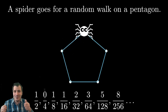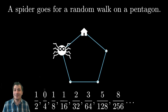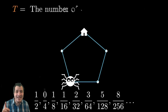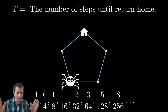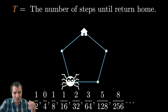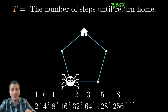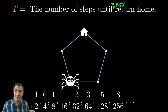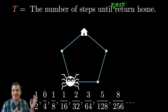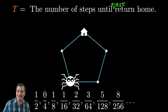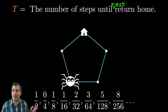What I'd like to do is show you the problem and explain it from a different point of view that explains why the Fibonacci numbers come up. It's a very simple-sounding problem: there's a spider who lives on a pentagon, and he goes for a random walk. He looks at the two possible places he could step and takes a step in one of those two directions completely at random — he's flipping a coin and walking around. We let T be the amount of time he spends on his walk before his first return home.